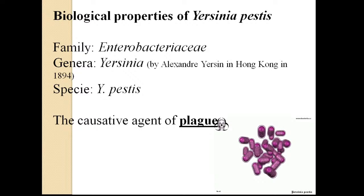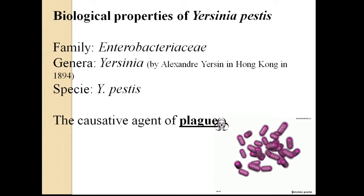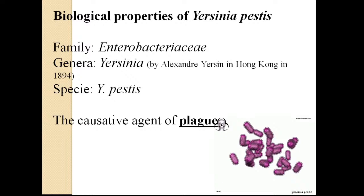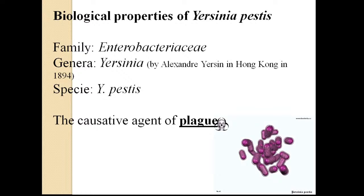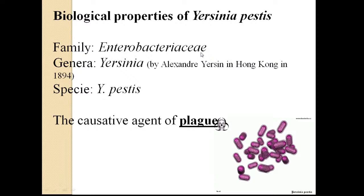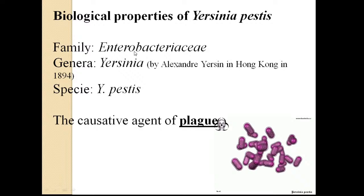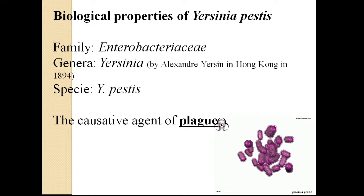The first pathogen we discuss is Yersinia pestis. We start with its biological properties, beginning from its scientific name. Yersinia pestis belongs to the family Enterobacteriaceae. Enterobacteria means intestinal bacteria that live in the digestive system and cause infections there. They can be normal microflora or pathogenic microorganisms.